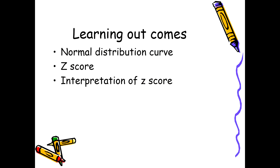We have already discussed the normal distribution curve and how this curve represents the presentation of variables in a normal healthy population. We have discussed the properties of this curve: it is unimodal, it is symmetrical, it is bell-shaped, and the mean, median and mode are in the center and always equal to zero.